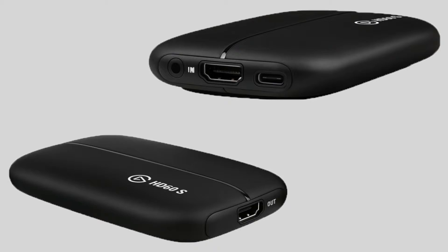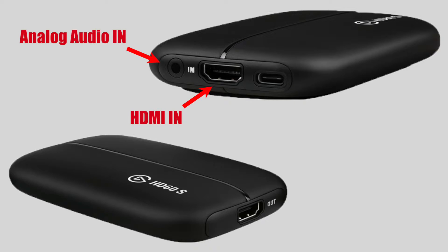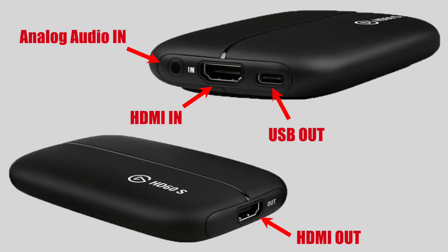Let's look more specifically at how to set up this equipment — your capture card with your computer, your monitor, and your console. Looking at the Elgato HD 60s, we'll notice four different ports on this device. There's an analog audio in, used to add additional audio to be captured by the device. There's an HDMI in, used to capture the console gameplay — this is what you connect directly from your console to the device. There's a USB out, where the device sends the gameplay signal to your PC or laptop for your streaming software. And lastly, there's an HDMI out, used to send the signal from the device to a monitor, which is what you use to play your game.